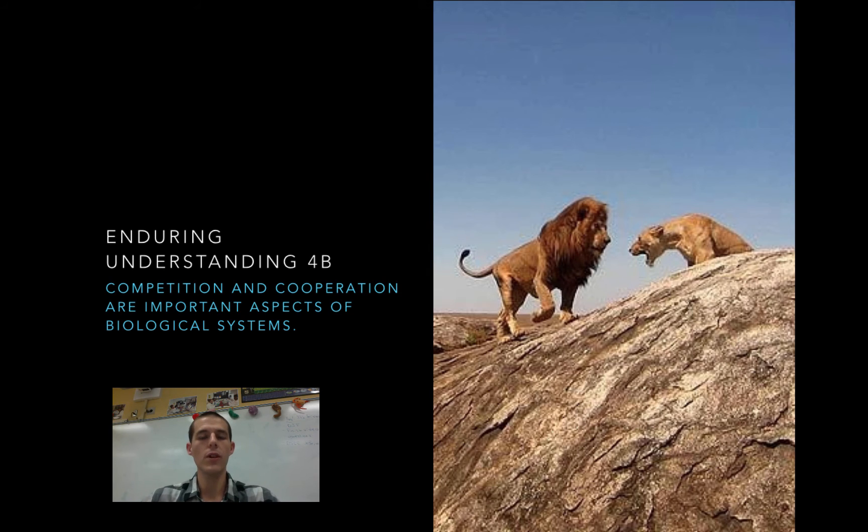At the ecosystem level, we're going to be looking at those competition, predation, mutualism, commensalism, all those interactions between animals, and then we'll look at the way that ecosystems interact with each other.